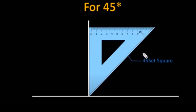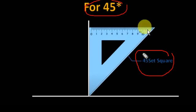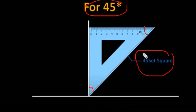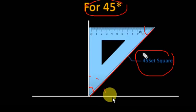Now let us see how to construct an angle of 45 degrees. To construct an angle of 45 degrees, you have to choose the 45-degree set square — the isosceles-shaped set square. This is 45 degrees and this is 45 degrees. Place the set square as seen on the screen in your notebook and draw a line from here to here. This area is 45 degrees — the total of both equal angles is 90 degrees, and half of that is 45 degrees. I hope you understand.